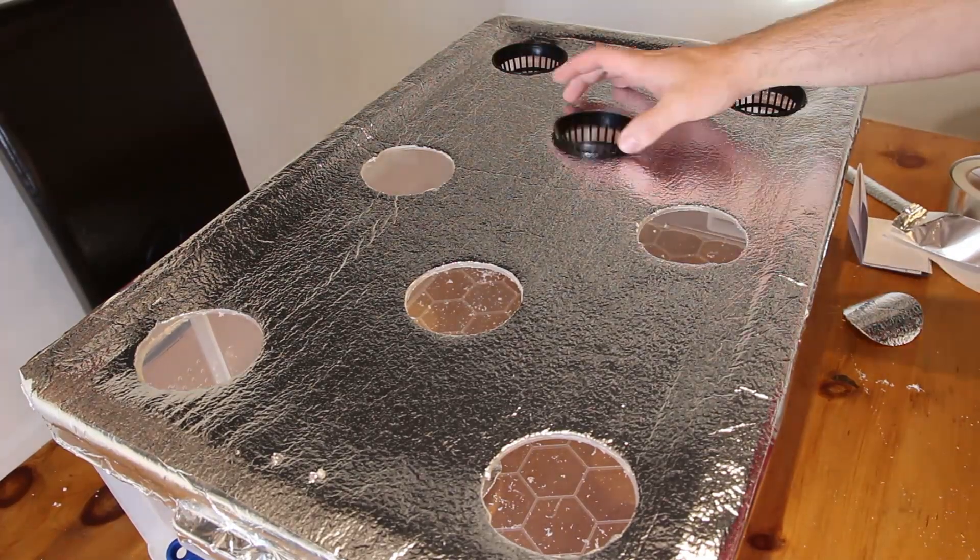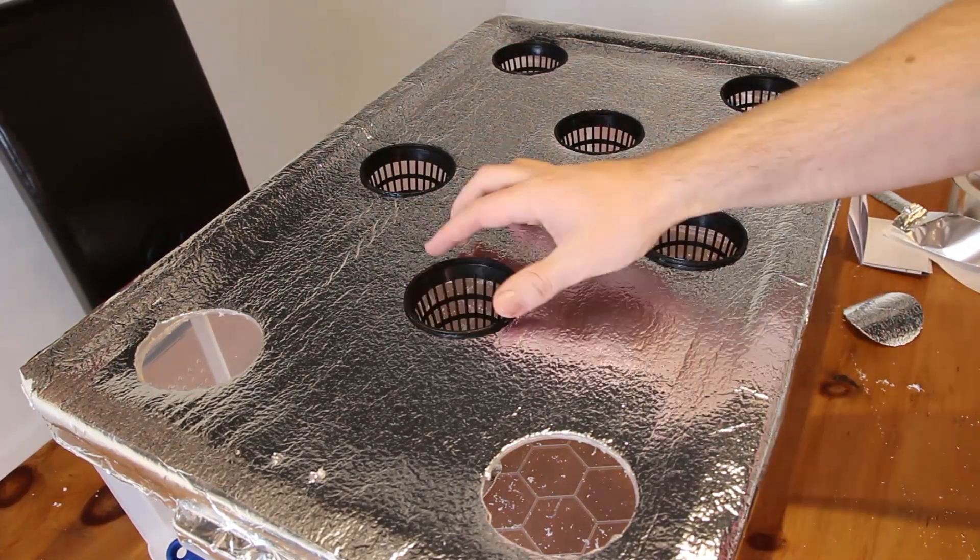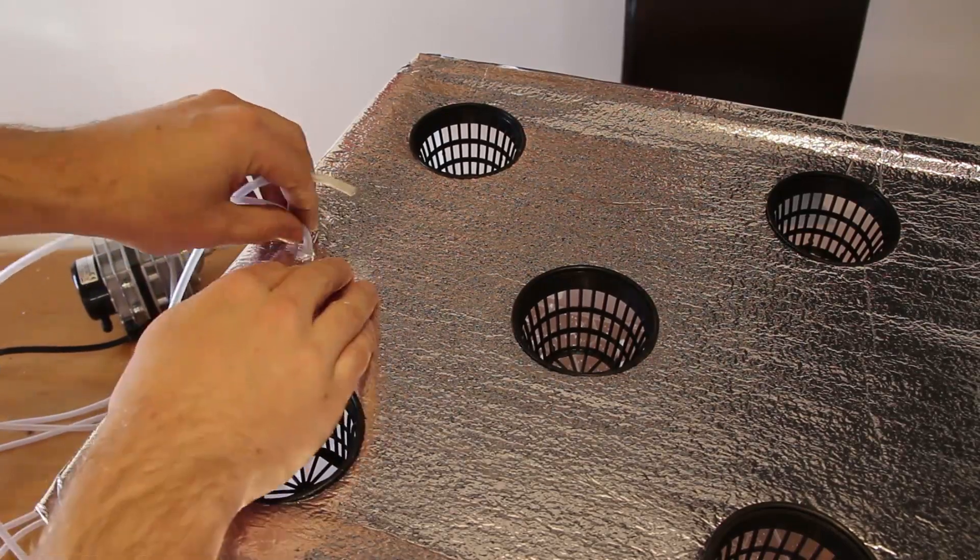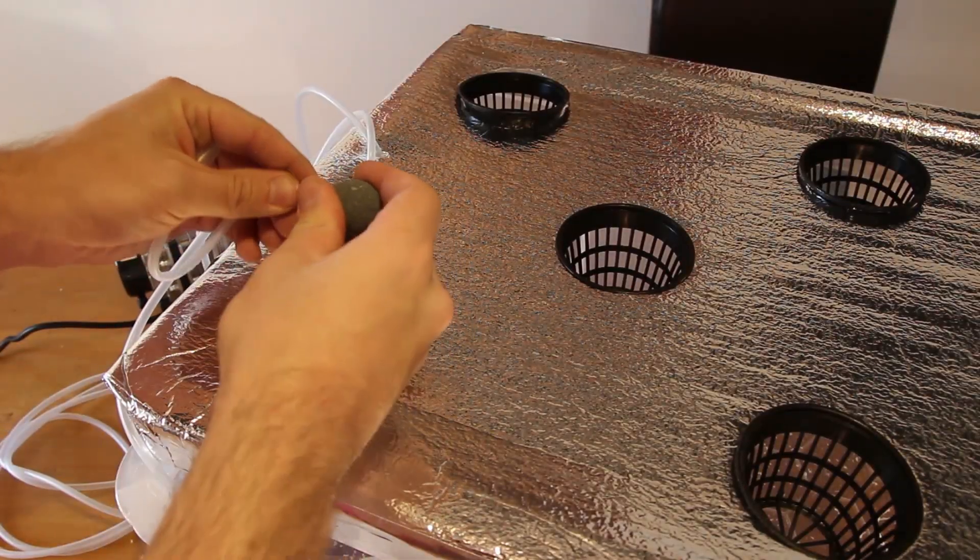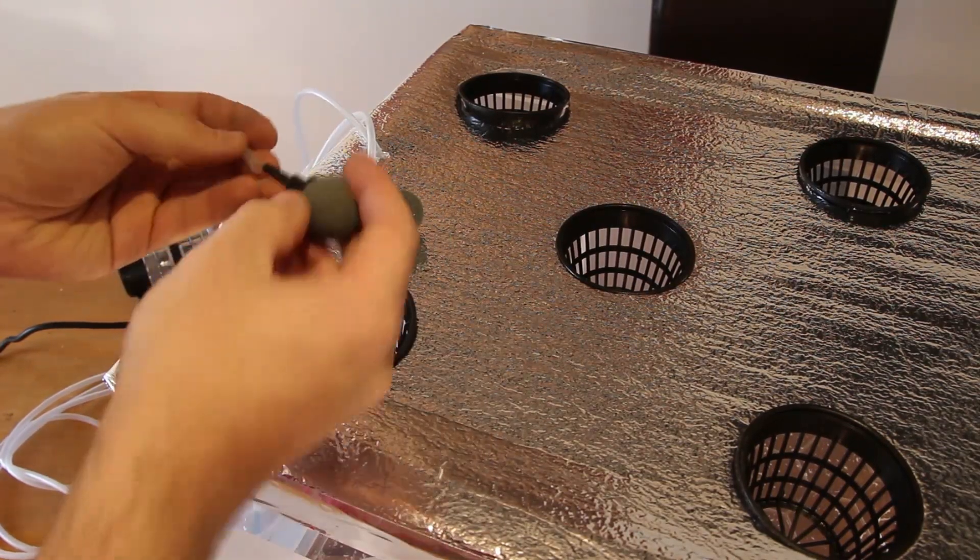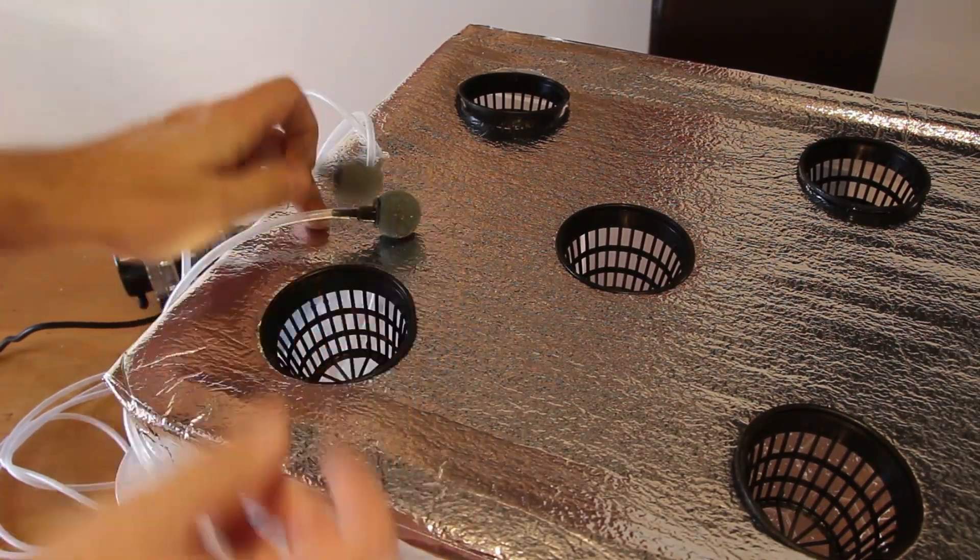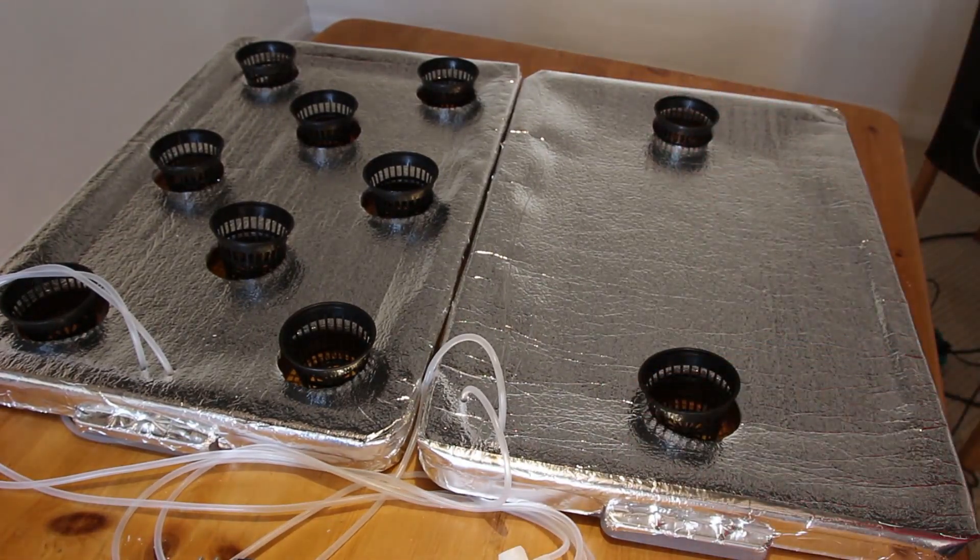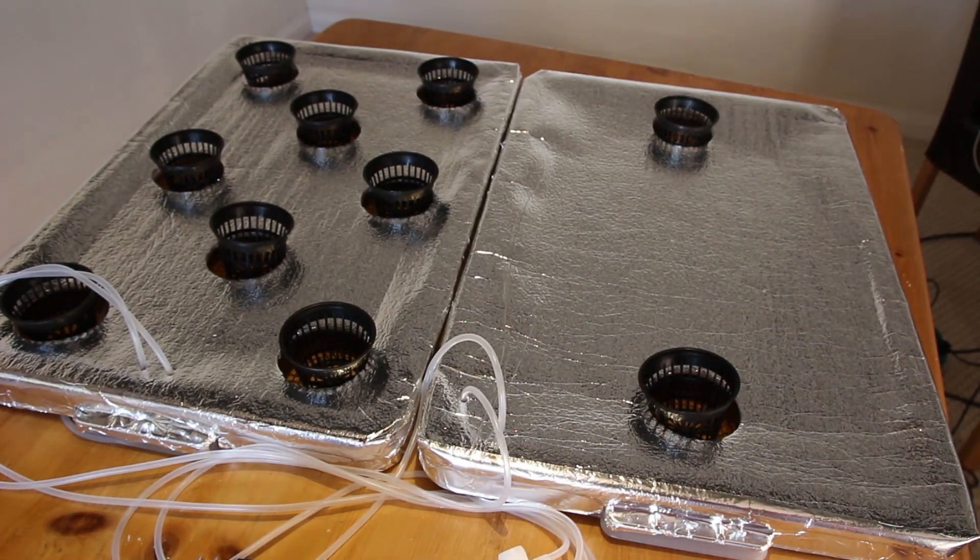Again test fitting the net pots we can see they all fit perfectly and the system is now almost done. All we need to do is feed in the air hose lines, attach the air stones and then we just need to give a bit of a clean out and we should be done. Here's the second lid that I've created. So as you can see there's only two net pots in this one and they're spaced a lot further apart.